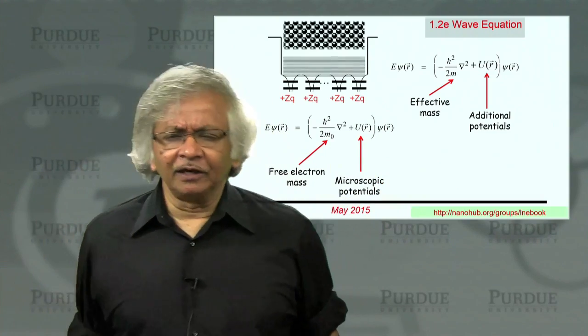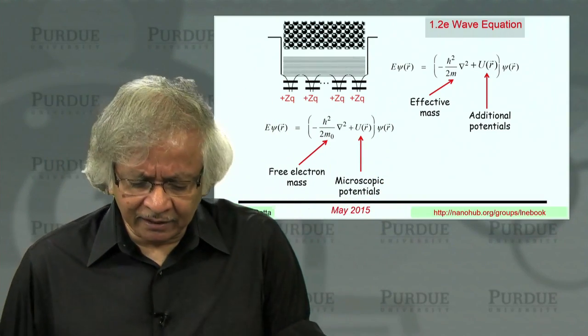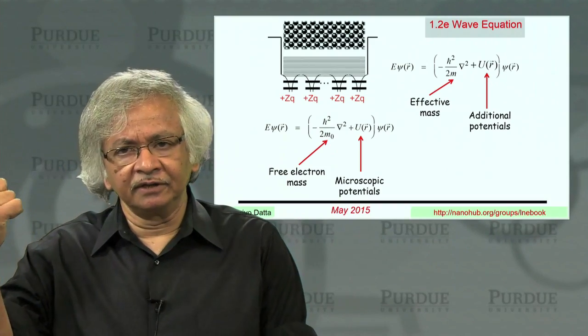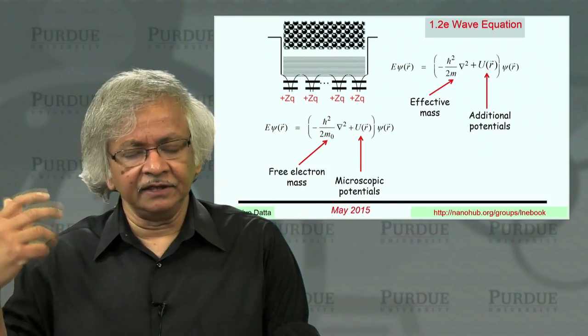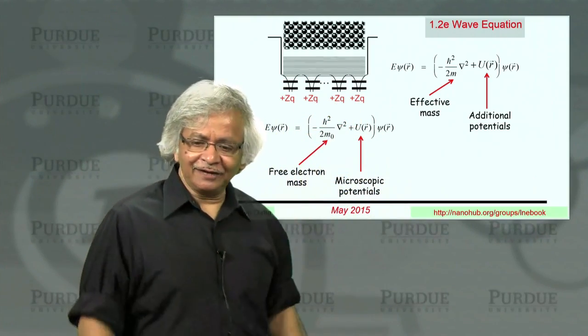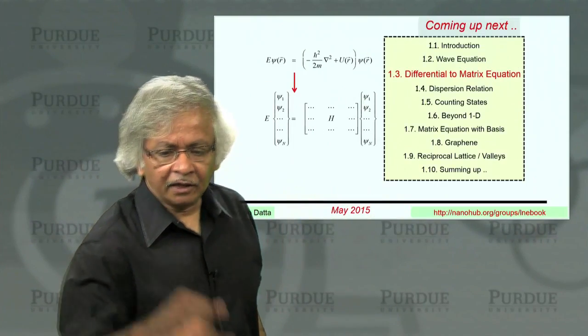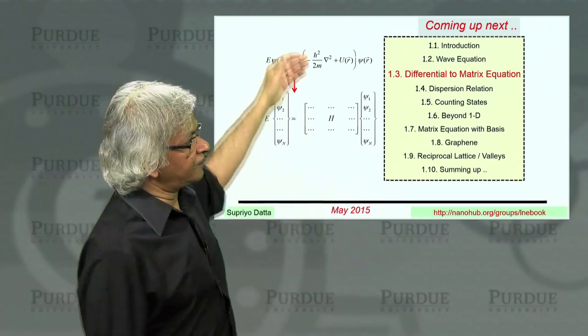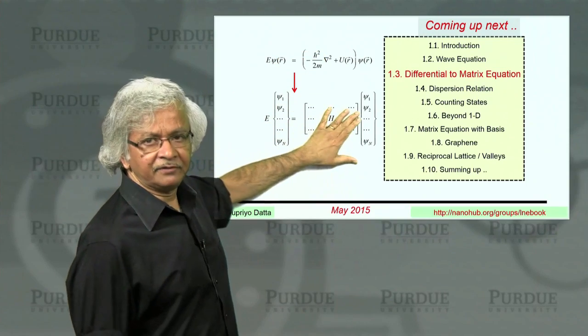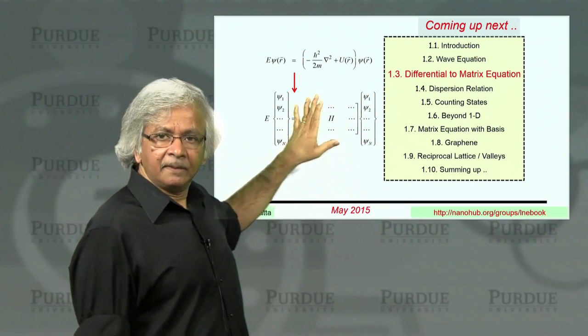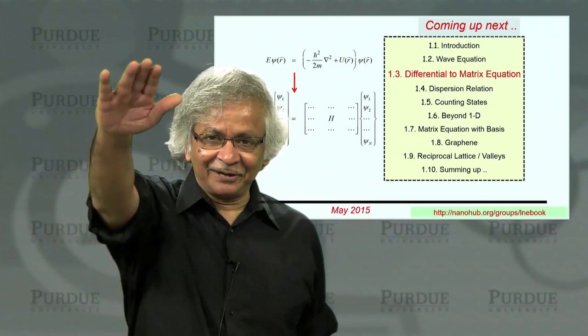That was a very quick introduction to this wave equation and these basic concepts, namely dispersion relation and the idea that whenever you confine a wave, you tend to get discrete levels. Now with that, we are ready to move on to the next topic, which is how you convert the differential equation into a matrix equation. The rest of the lectures will be about the matrix equation. Thank you.